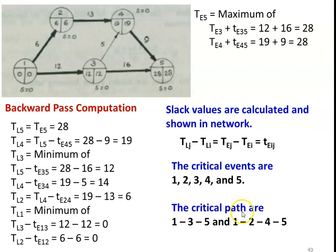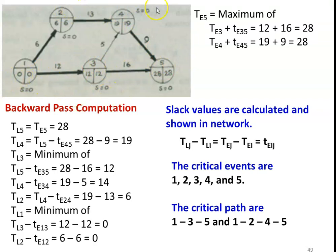The critical path in the network has two critical paths: 1-2-4-5 and 1-3-5. These are the two critical paths. Excepting the activity 3 to 4, all the other activities are critical activities.